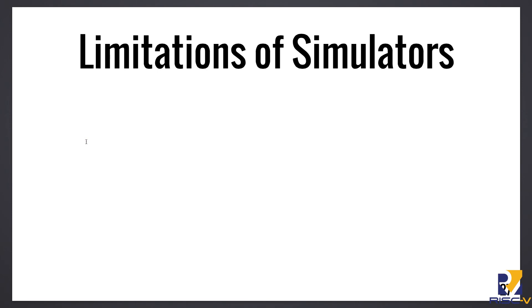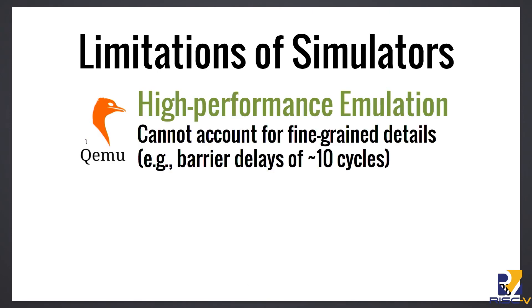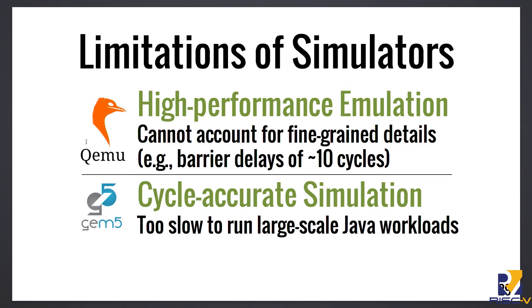Traditionally, you would choose one of two options. You would either run on a high-performance system-level emulator like QEMU or SIMIX, which allows you to run entire workloads including Java workloads, but it doesn't account for the fine-grained details in the microarchitecture that you would need to actually evaluate the interaction within them. The alternative would be to use a cycle-accurate simulator like gem5, which gives you a detailed microarchitecture model and allows you to account for these fine-grained interactions, but they are too slow to actually run these large workloads. So you're stuck in an in-between point where you need something that must be simulated for a very long time but also at high fidelity — whichever option you choose, you end up with a lack of realism.